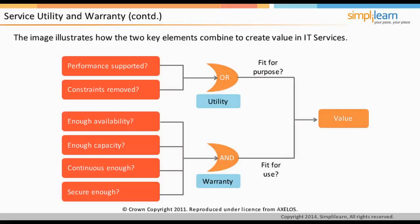Utility is perceived by the customer from the attributes of the service that have a positive effect on the performance of tasks associated with desired results. Removal or relaxation of constraints on performance is also perceived as a positive effect — if you are able to support the performance of a customer's services or remove challenges at the customer end, the service utility is on the higher side. Warranty is determined by four parameters: availability, capacity, continuity, and security. These parameters determine if the service is fit for use for a customer to achieve business outcomes.